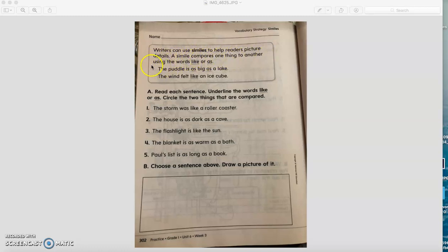So the puddle is as big as a lake. The wind felt like an ice cube. Now read each sentence, underline the words like or as, and circle the two things that are compared.